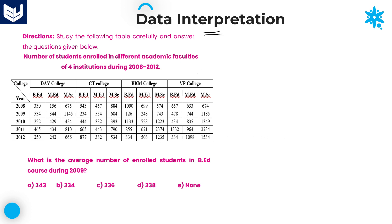First of all, what is the information which is provided in the question? Study the following table carefully and answer the questions given below. The information is about the number of students enrolled in different academic faculties of four institutions during the years 2008 to 2012. Here the information is very important. Understanding the information is very important. All the information provided in the table includes college and year.